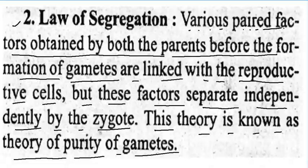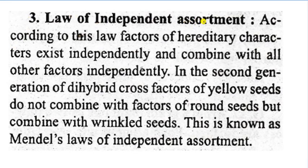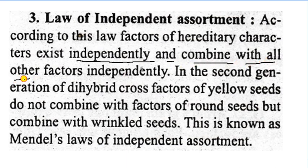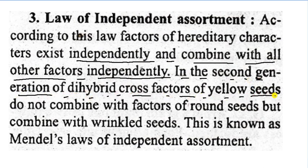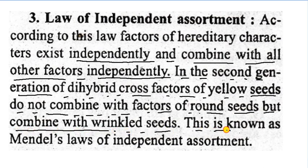Now the third law is the law of independent assortment. According to this law, factors of hereditary characters exist independently and combine with all other factors independently in the second generation of a hybrid cross. Factors of yellow seeds do not combine with factors of round seeds but combine with wrinkled seeds. This is known as Mendel's law of independent assortment.